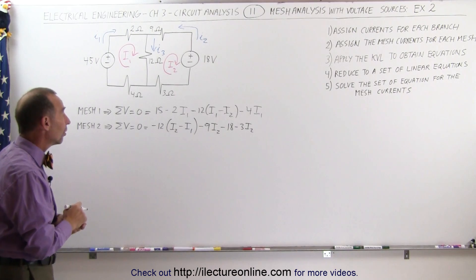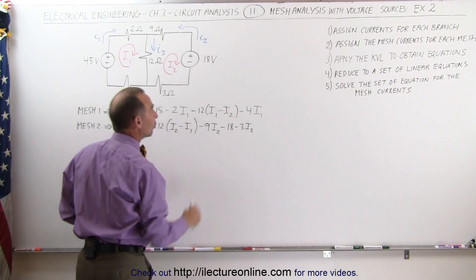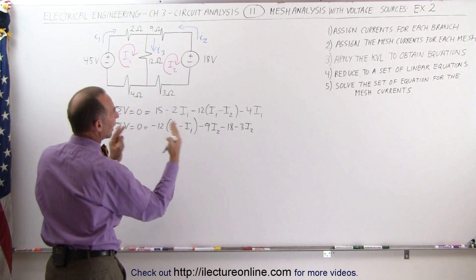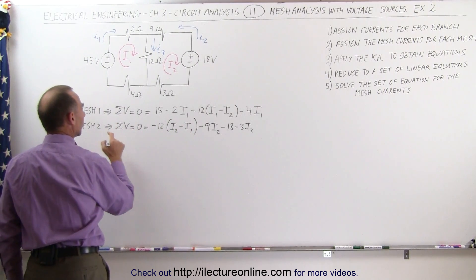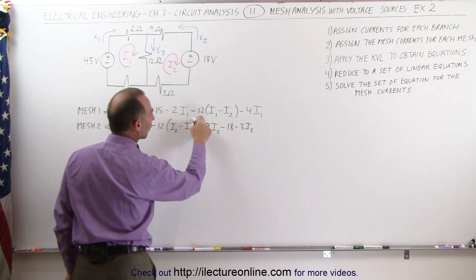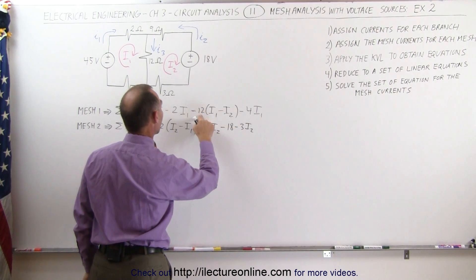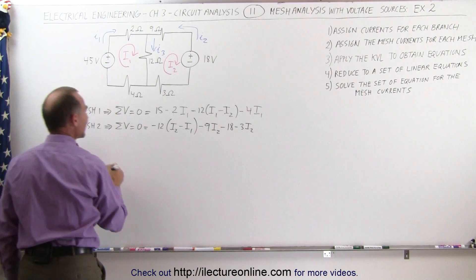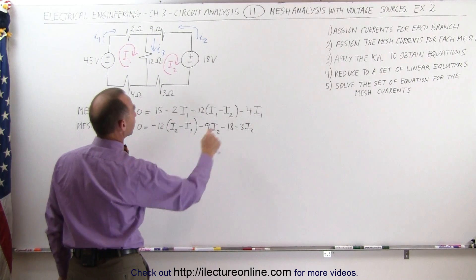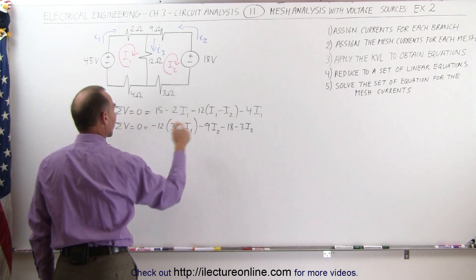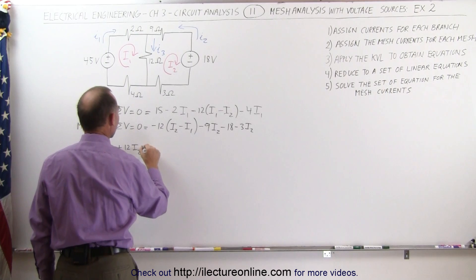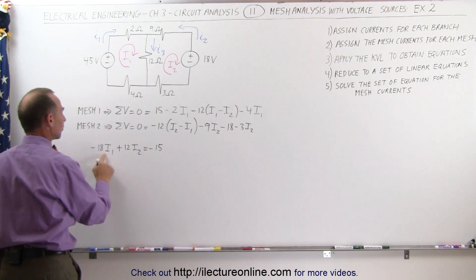I now have my two equations, which allow me to solve for the two unknowns I1 and I2. I want to produce a set of linear equations by collecting all the I1 and I2 terms together. The first equation becomes: minus 2 I1, minus 12 I1, minus 4 I1 — that's minus 18 I1. Adding the I2 terms: minus 12 times minus I2 gives a plus 12 I2. The plus 15 volts moves to the other side and becomes minus 15 volts. That's the first equation in terms of I1 and I2.